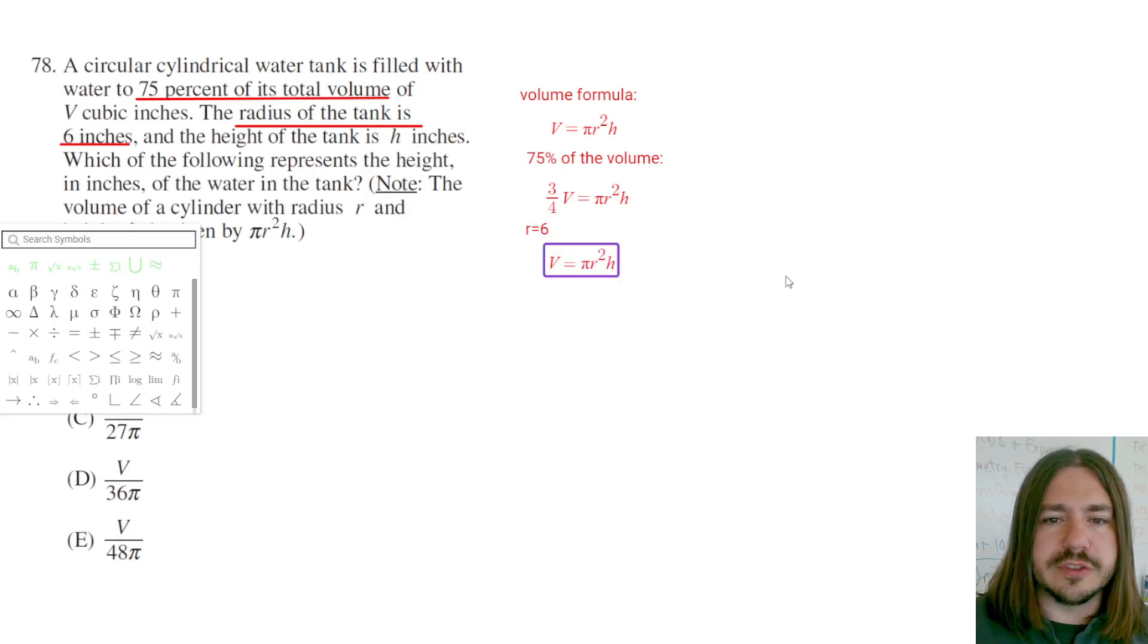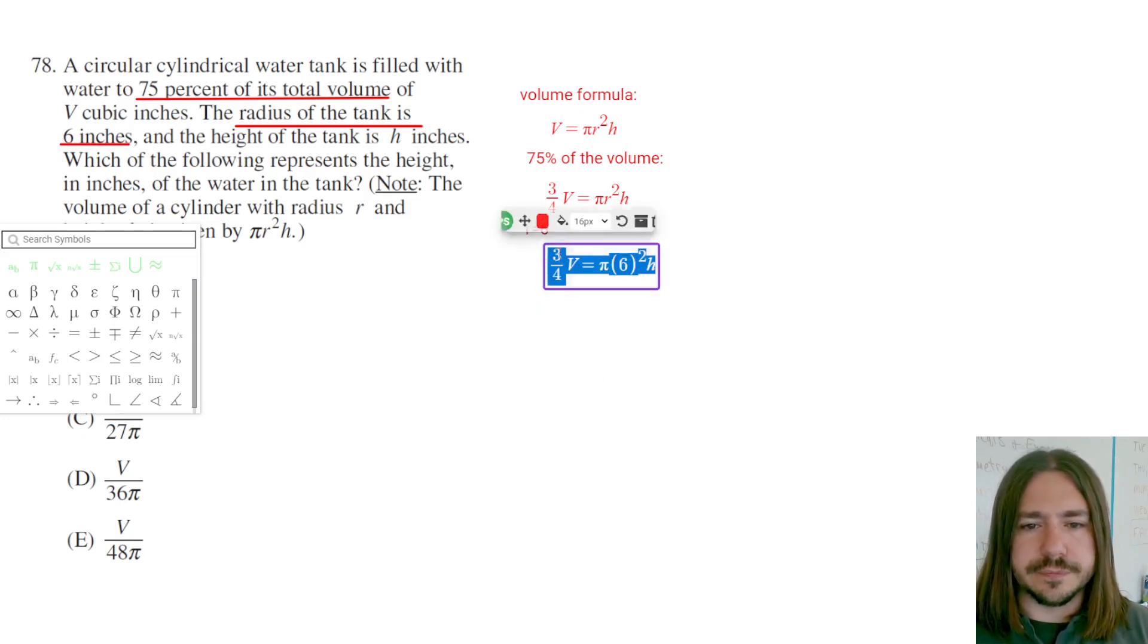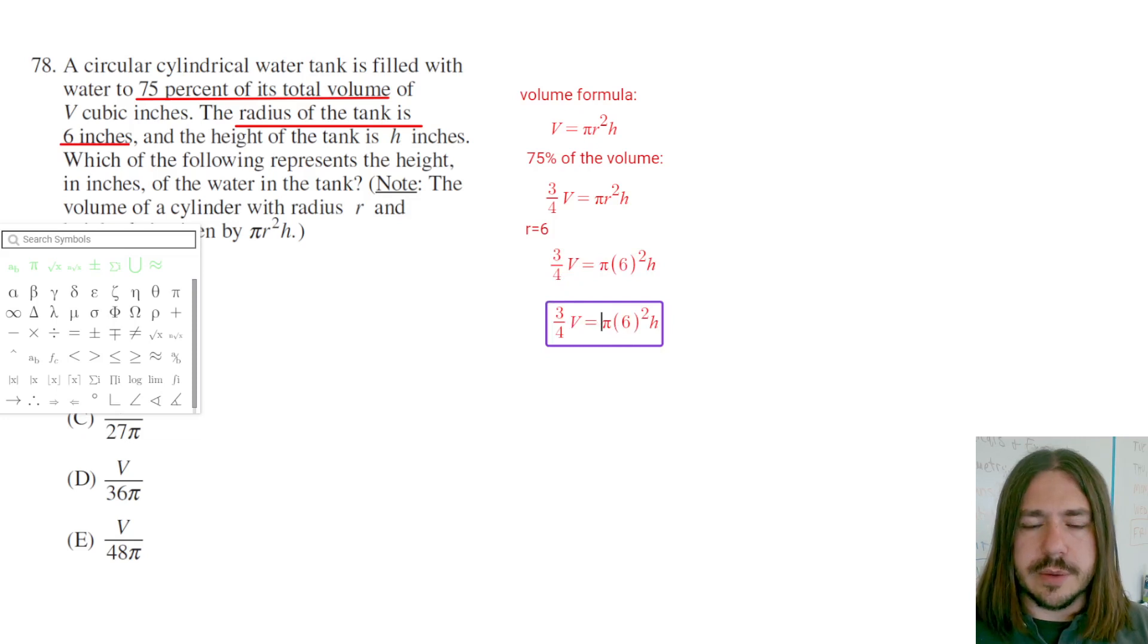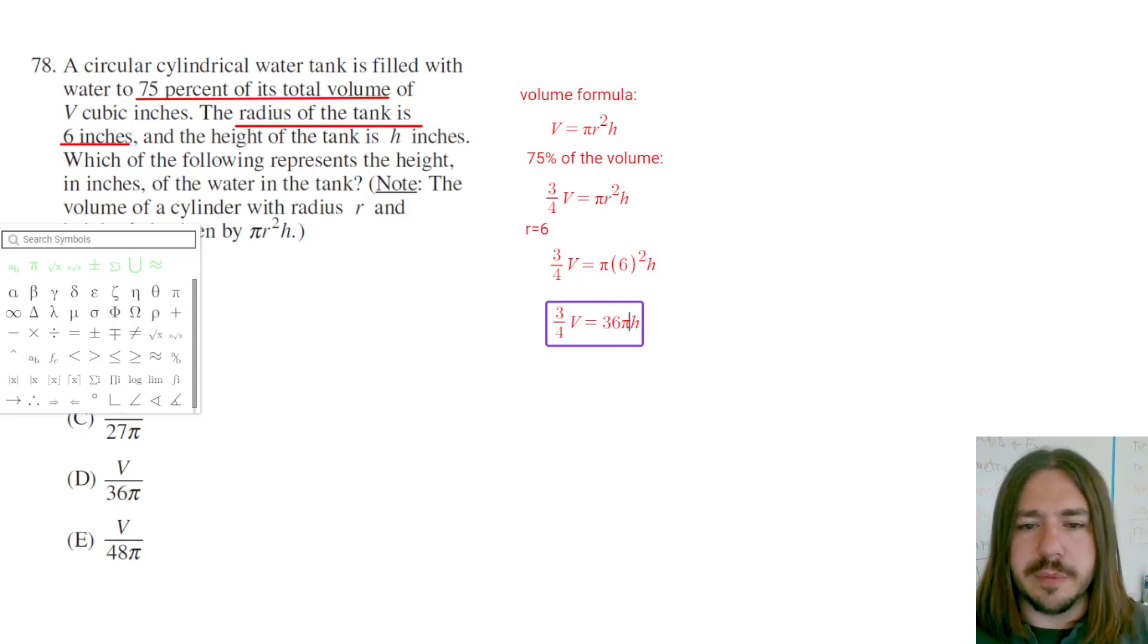So we've got three-fourths, which is the 75% of the volume, equals pi times 6 squared. So 6 squared is 36. I'm going to put the 36 out here. Multiplication is commutative so the order doesn't really matter.